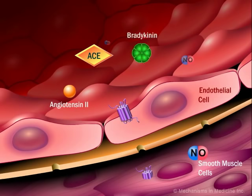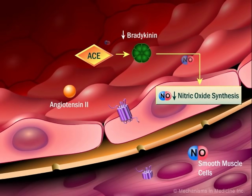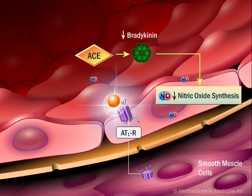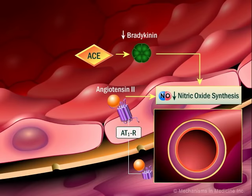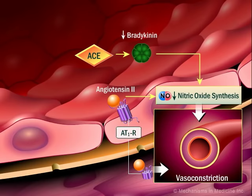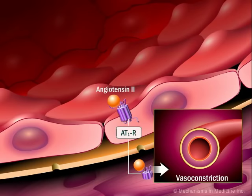Angiotensin-converting enzyme also degrades bradykinin, which is required for synthesis of a major vasodilator, nitric oxide. Angiotensin-2 binds AT1 receptors expressed on the surface of vascular endothelium and impairs nitric oxide synthesis as well. Reduced bioavailability of nitric oxide combined with the stimulation of AT1 receptors on smooth muscle cells causes vasoconstriction.